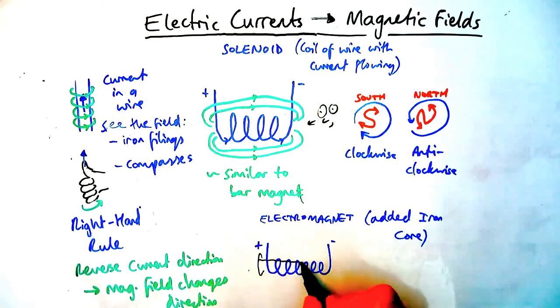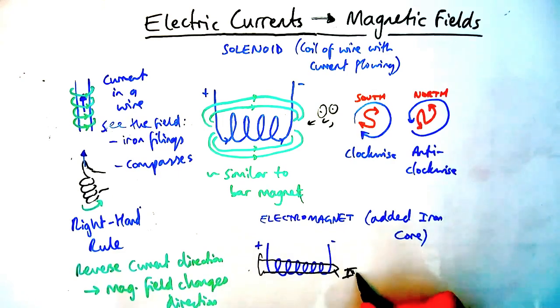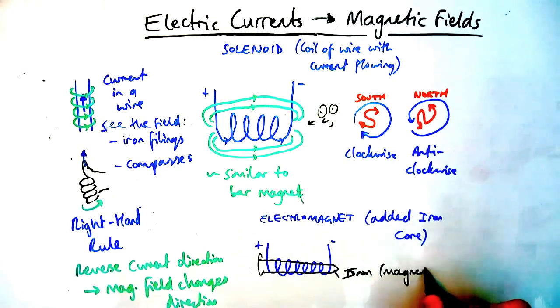If you add an iron nail and wrap wire around it it makes it an electromagnet which is even stronger than a solenoid because iron is magnetic so contributes to the magnetic field.